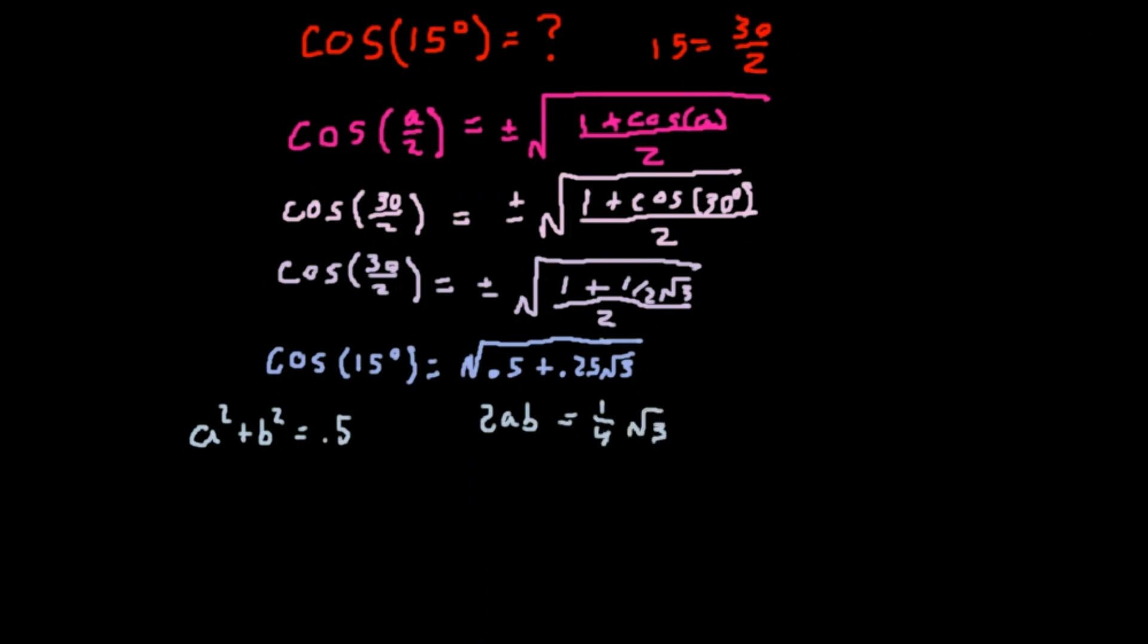Logically, if 2ab has a square root in it, then a squared plus b squared should get rid of the square root. We can divide both sides by b to solve for a, and we can replace a into our original equation.